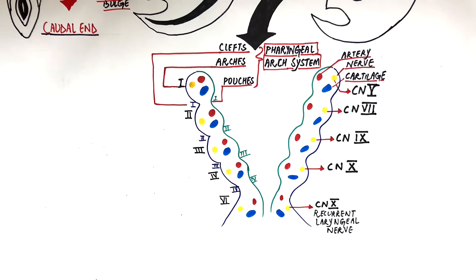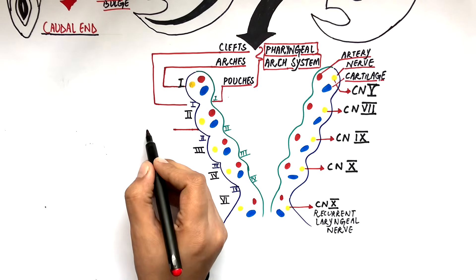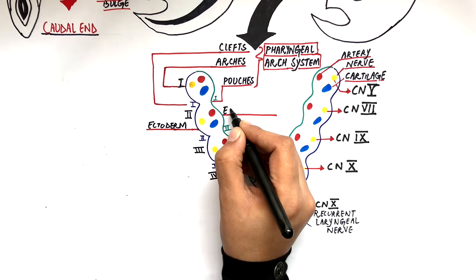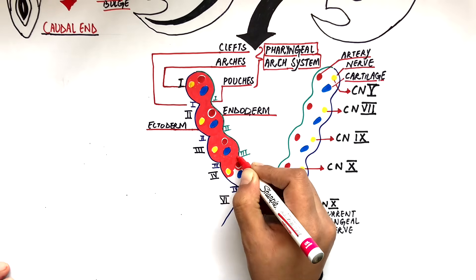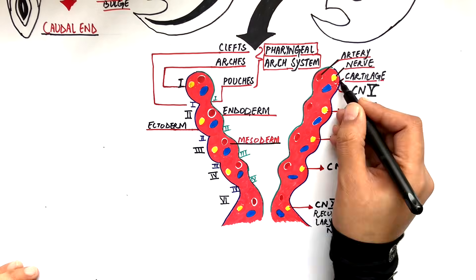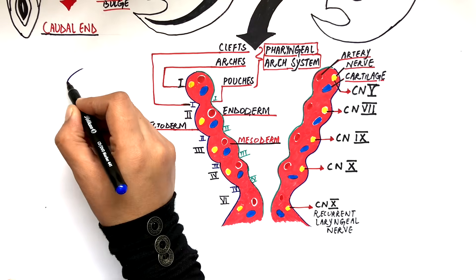The cartilage of the first arch is called Meckel's cartilage and that of the second arch is Reichert's cartilage. The rest of the arches do not have specific names for their cartilages. The outer wall of these pharyngeal arches is made up of ectoderm, endoderm will make up the inner wall, and their central core is made up of mesoderm, which will be invaded by the neural crest cells from the neural tube.